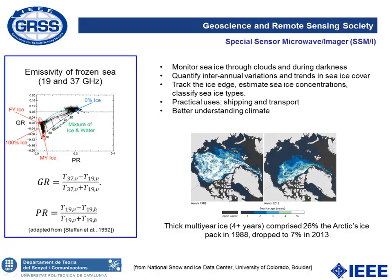On the bottom right image, there is an image of thick multi-year ice acquired by SSMI in March 1988, compared to multi-year ice measured in March 2013. There is an important variation: in 1988, 26% of the Arctic ice pack comprised multi-year ice, but it dropped to 7% in 2013. Practical uses of this information include navigability, shipping and transport, as well as better understanding of the cryosphere for climate studies.